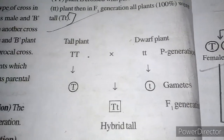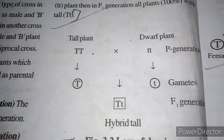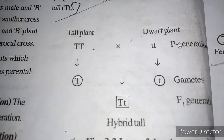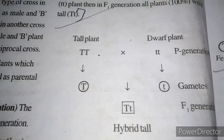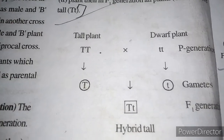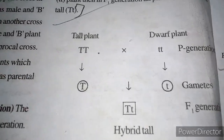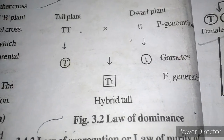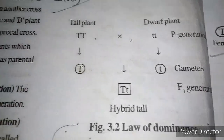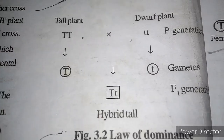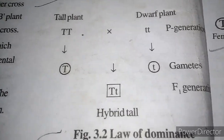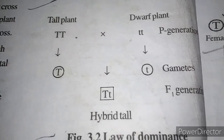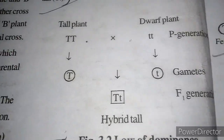You can see in the table: the tall plant has capital T, capital T, and the dwarf plant has small t, small t. When these are crossed, the F1 plants express themselves as tall. This demonstrates the law of dominance in a monohybrid cross.